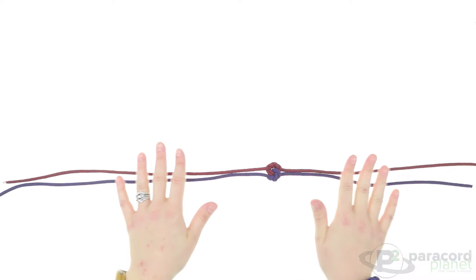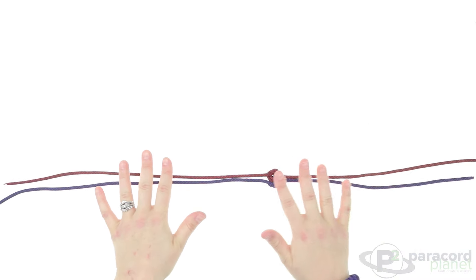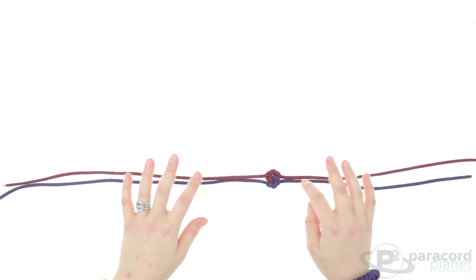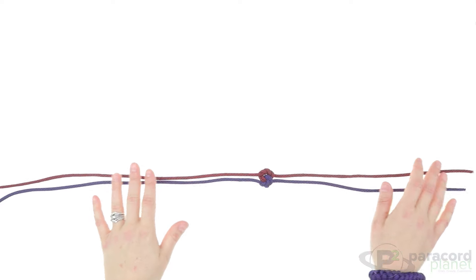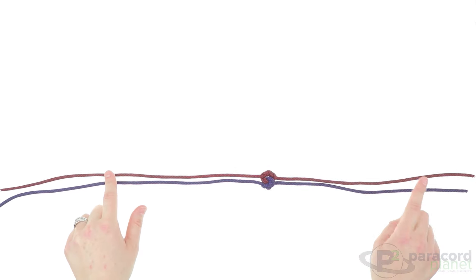So this is what you should have on your mandala knots so far—they should be nice and tight next to each other there. To turn it into a bracelet, we are going to do a diamond knot on one side and a snake knot on the other.